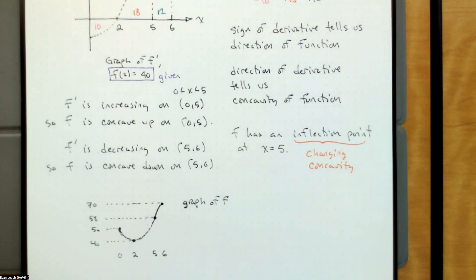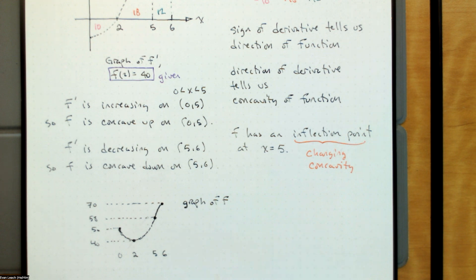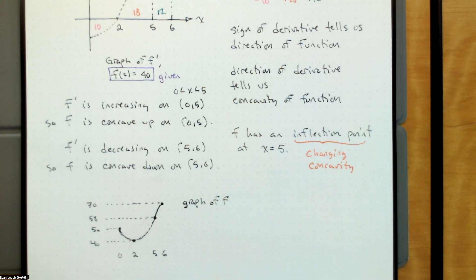We're reading the derivative and the area between the derivative and the x-axis to see how much the function changes, but I always have to give you a starting point. I could say f of two is equal to 40, or f of zero is equal to 50 — I could give you any one of these points as long as you know the area going up to it and coming out of it. Given this graph, it looks like I'm going to give you zero, two, five, or six as fair game for a value.